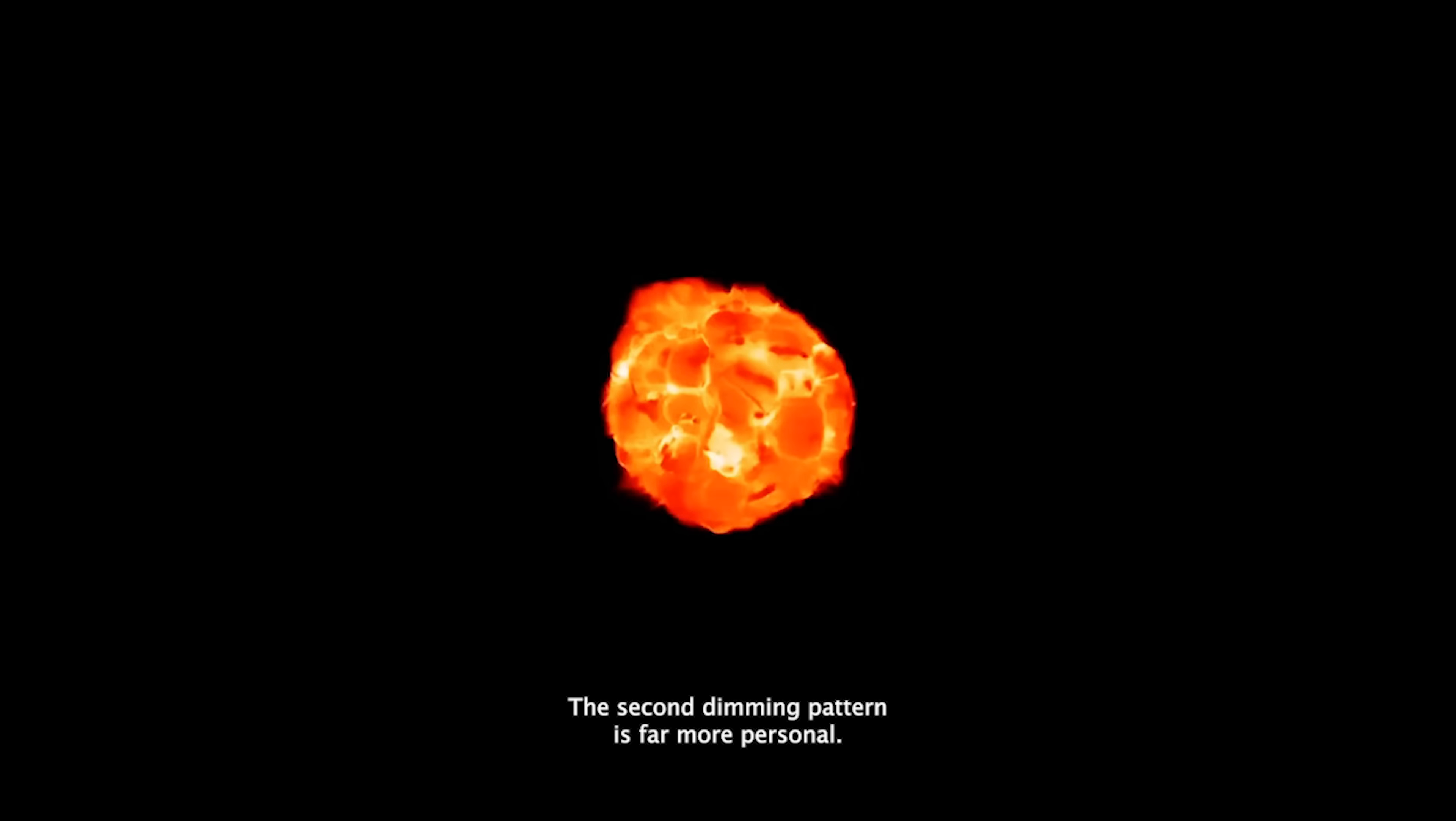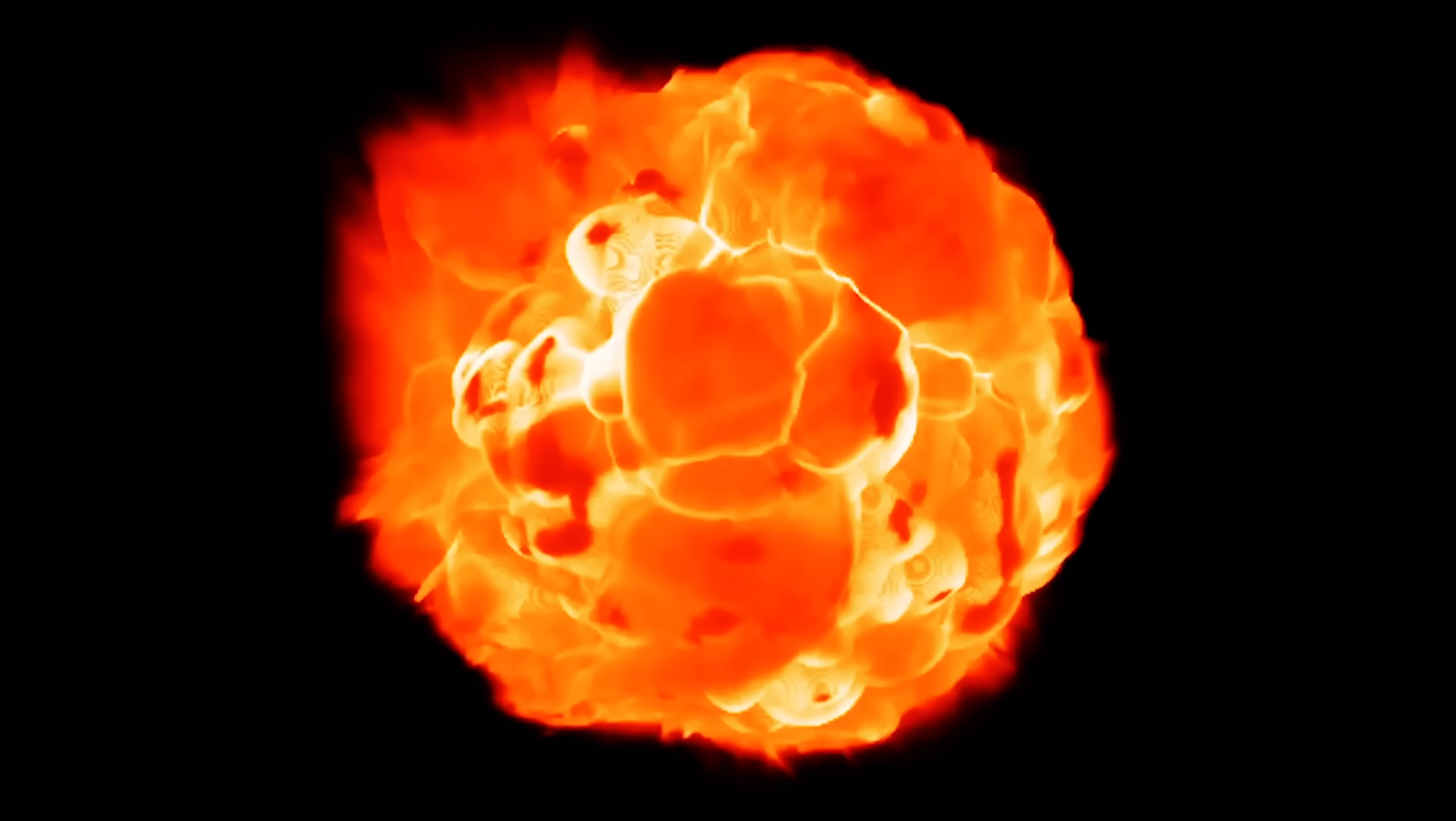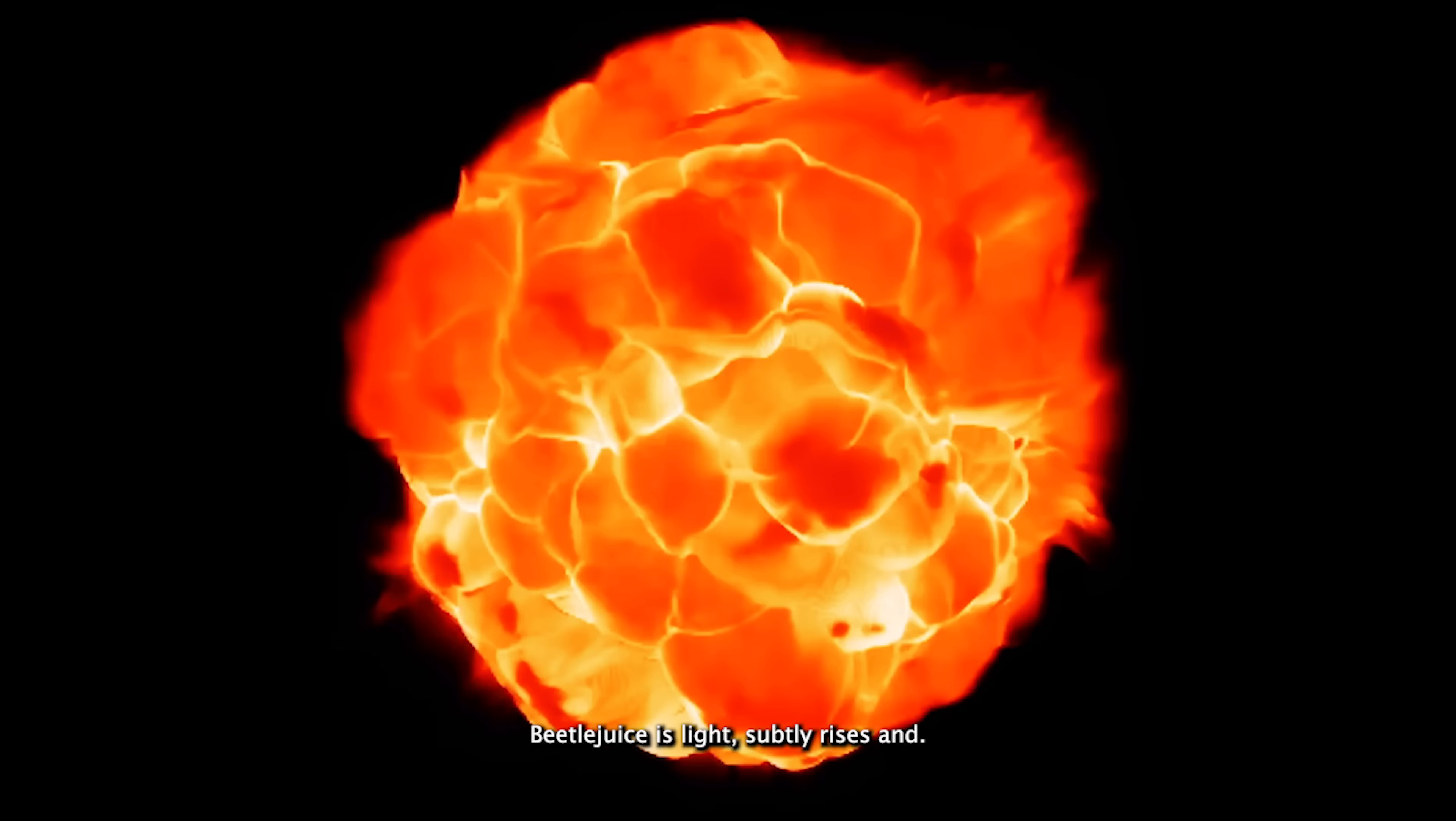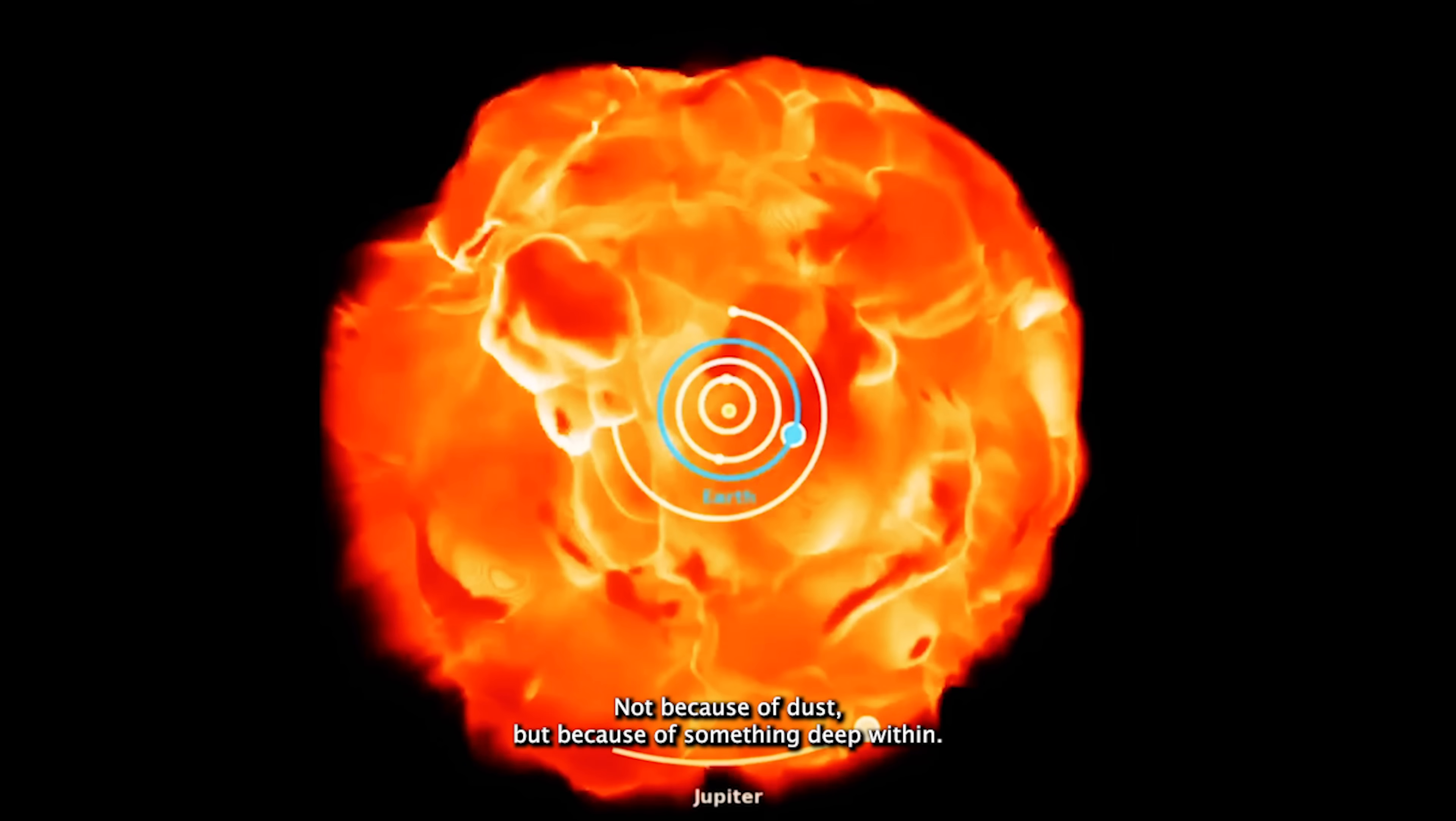But that's only one piece of the puzzle. The second dimming pattern is far more personal. Every 400 days, Betelgeuse's light subtly rises and falls, not because of dust, but because of something deep within.